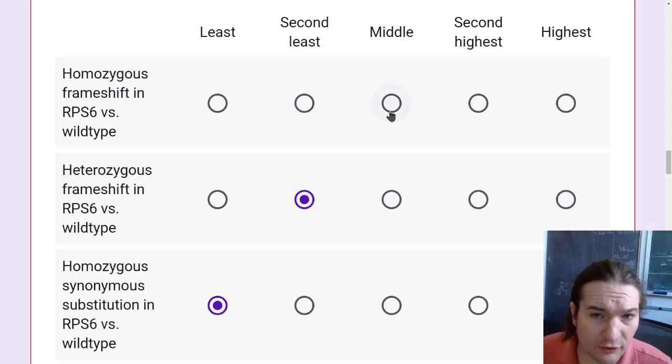However, a homozygous frameshift mutation, now all of a sudden, that gene does not work at all, most likely, and so it has the, of these three, it is the most likely to cause a problem.